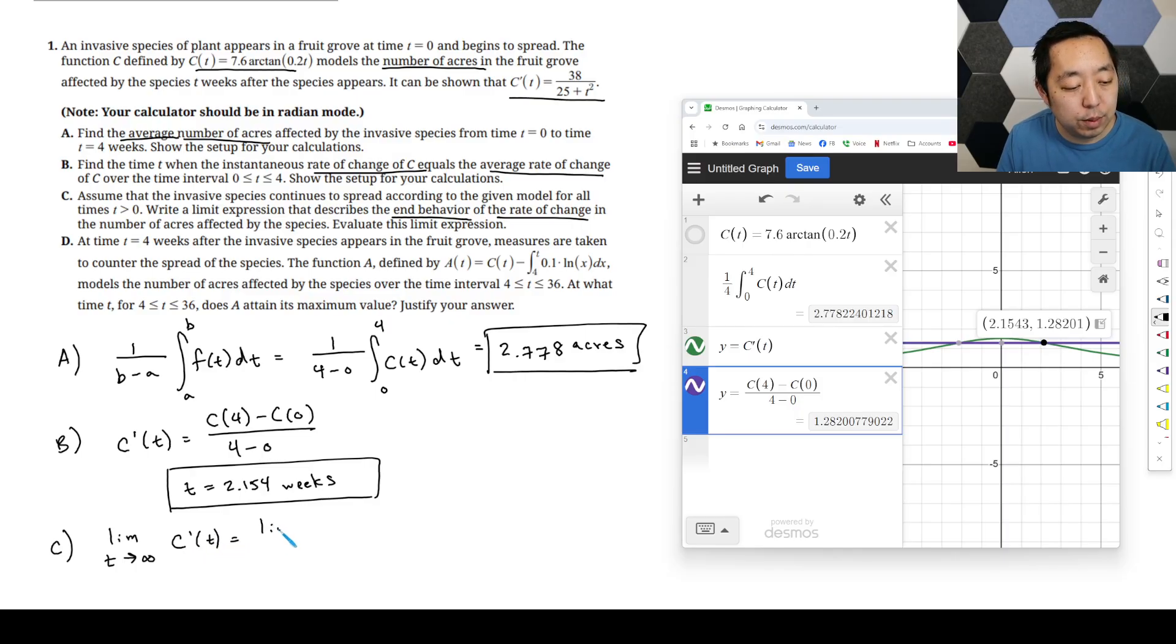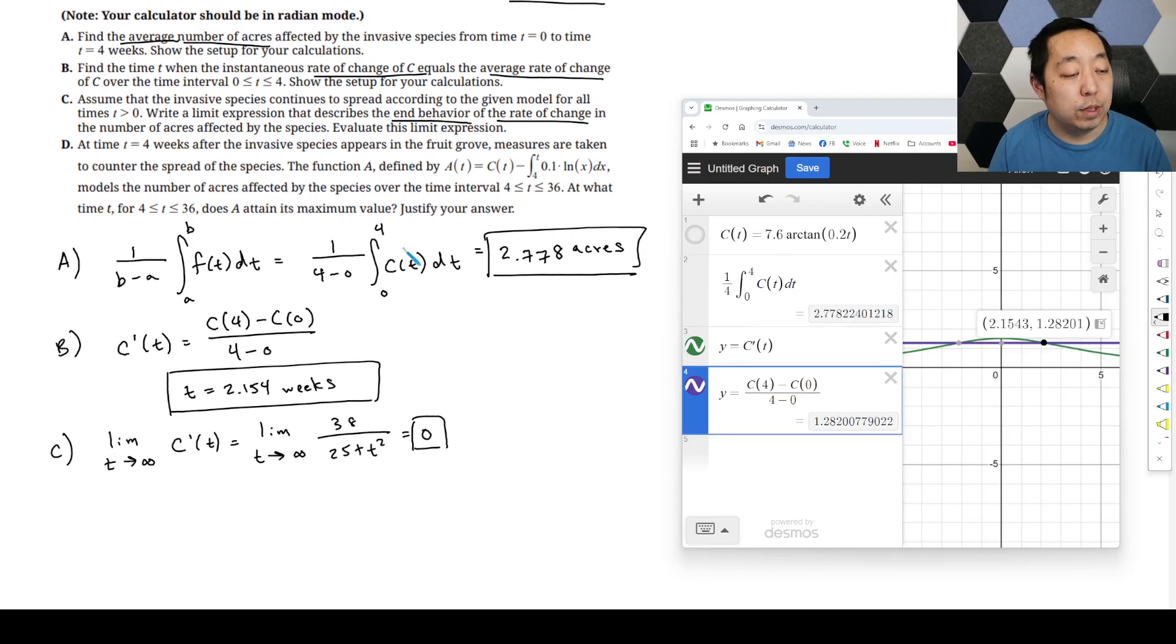Which would be the limit as T goes to infinity of 38 over 25 plus T squared. And that's going to go to 0 because it's going to be 38 divided by a huge number because T squared is going to be a giant number. 38 divided by a giant number is going to be 0. So evaluate the limit expression.